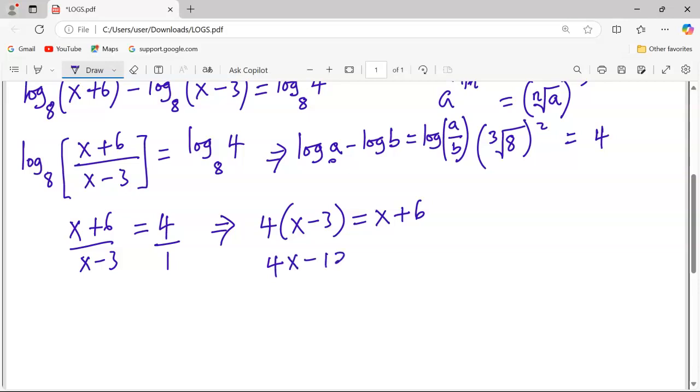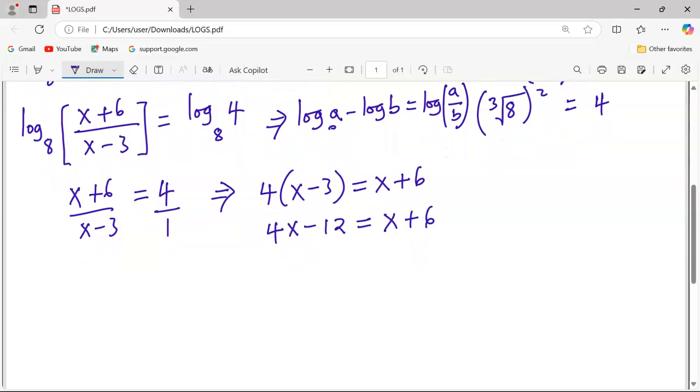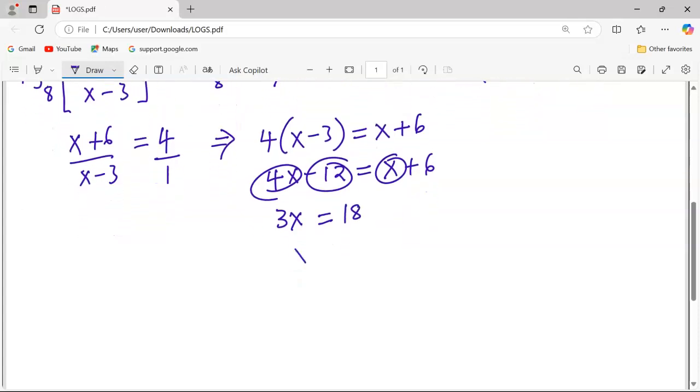4x minus 12 is equivalent to x positive 6. And when we group like terms, 4x and x will become 3x equals to negative 12 now becomes positive on the other side. So 6 plus 12 becoming 18.